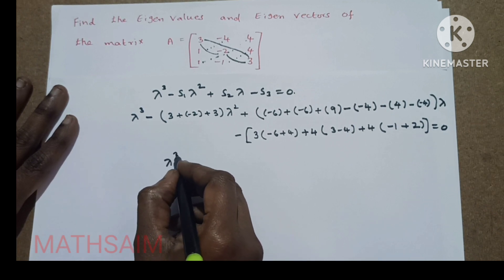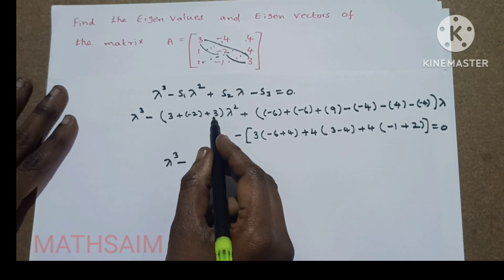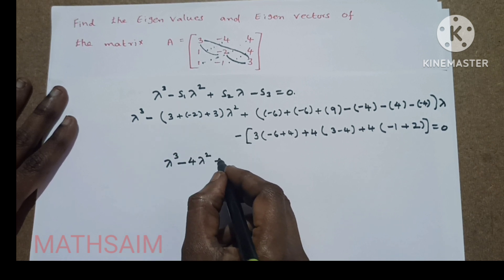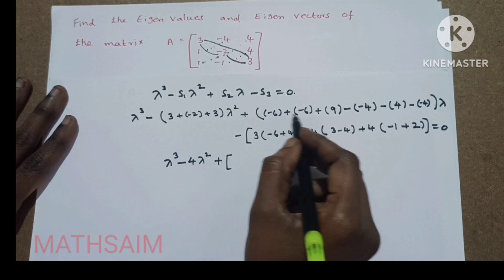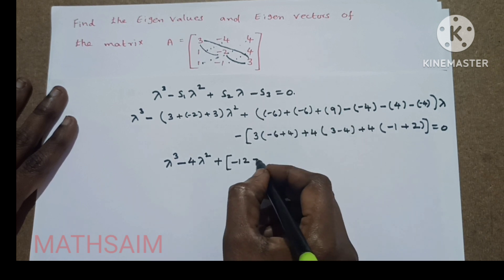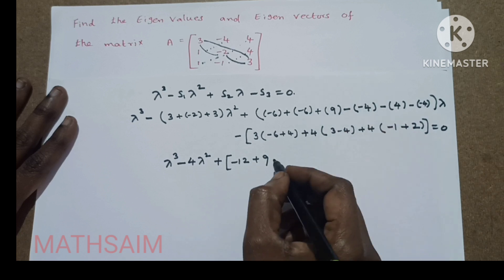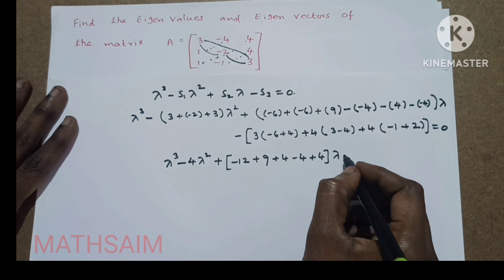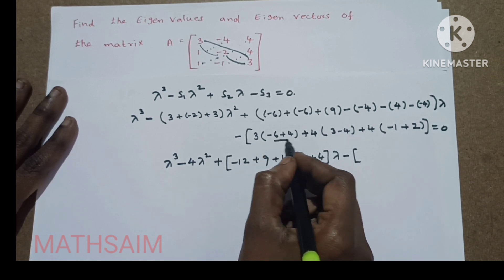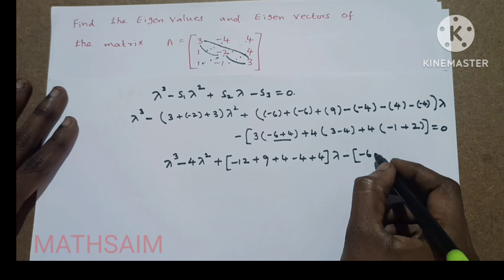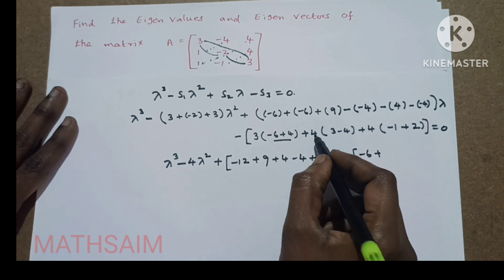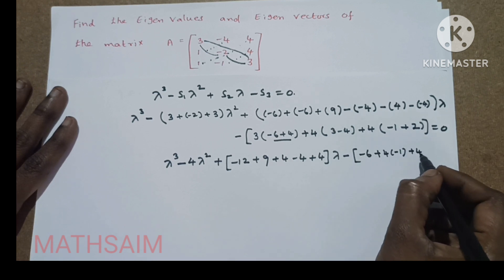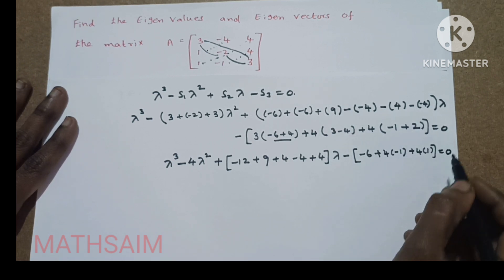Simplifying, this gives us: lambda cubed minus 4·lambda squared. Then for the lambda coefficient: minus 12 plus 9 plus 4 minus 4, plus 4, into lambda. Then minus 3 times minus 2, minus 6 plus 4 times minus 1, then plus 4 times plus 1, equal to 0.